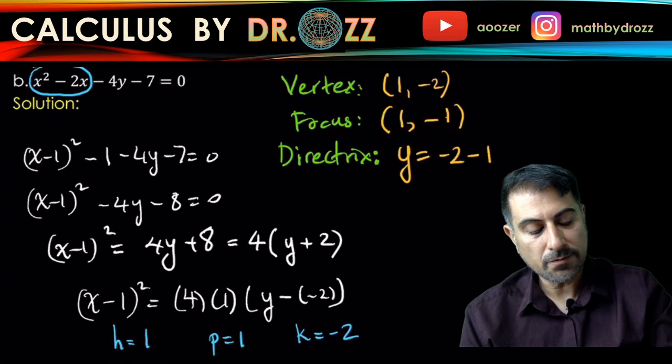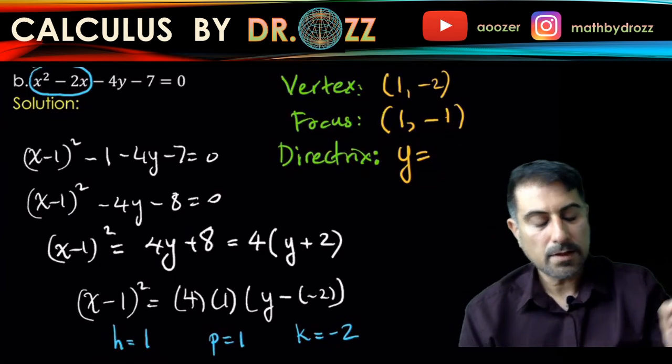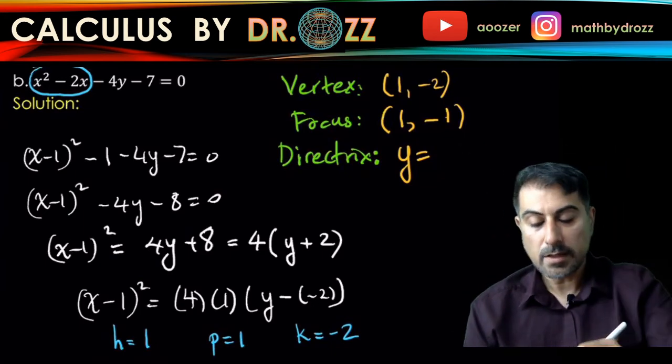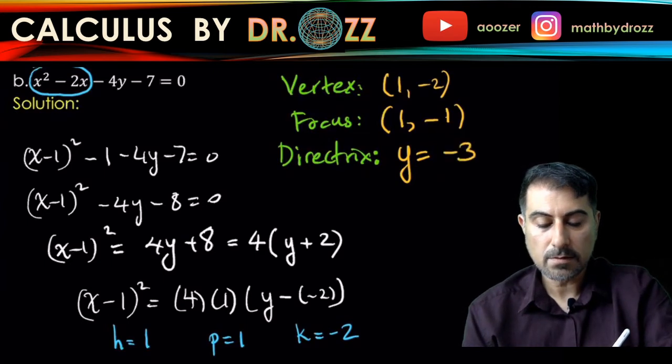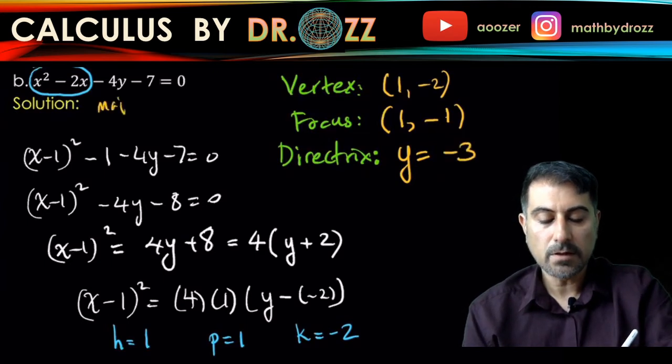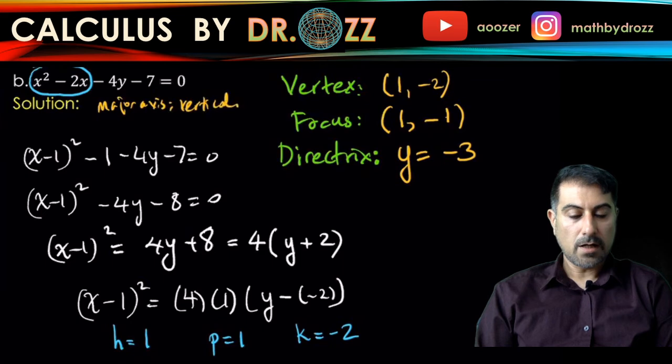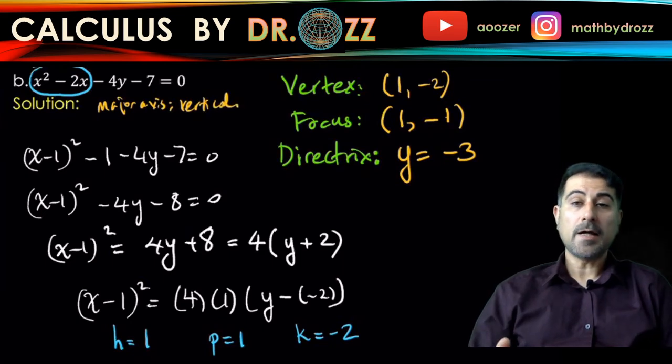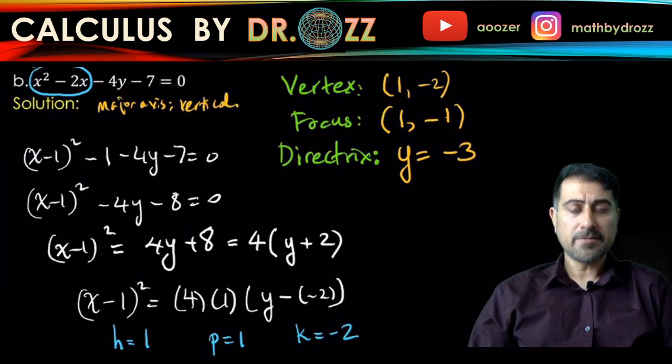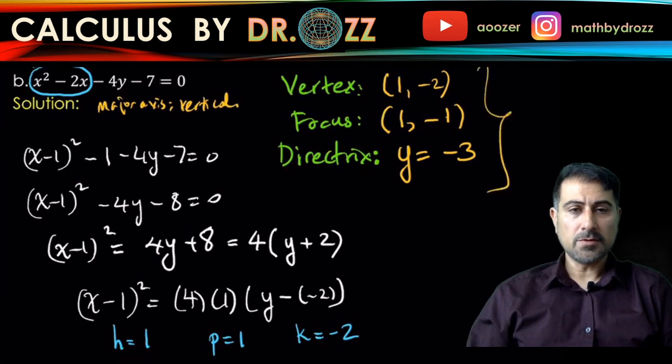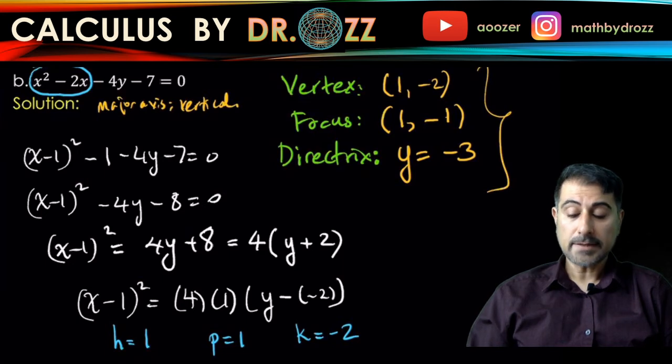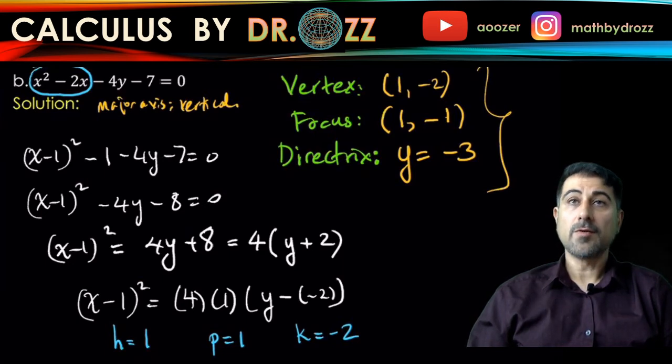So here the major axis is vertical. We have all these numbers found. Go ahead now and please graph this parabola and verify these findings in your graph. You can pause the video anytime and you can use the TI-84 right now. Let me just show you what I got here.